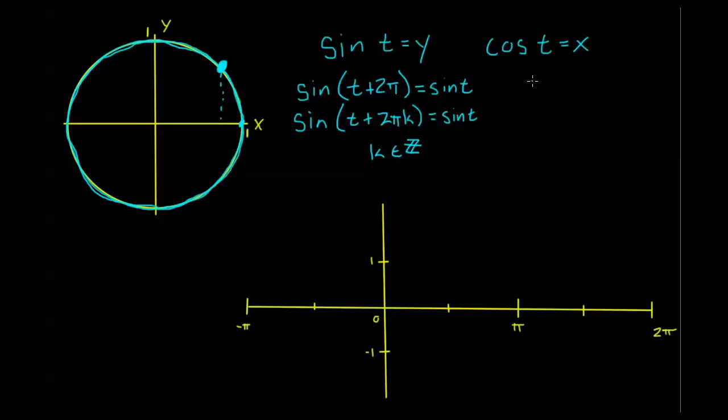And the exact same thing applies to cosine. Cosine also has a period of 2π. So cosine of t plus 2kπ is going to be equal to cosine t as well.